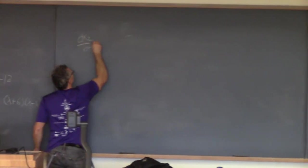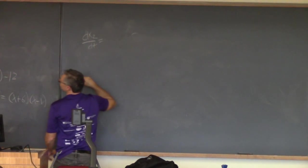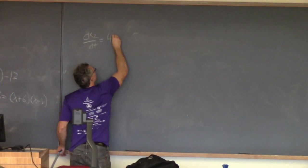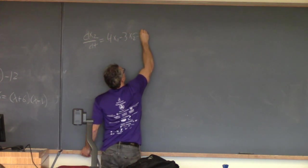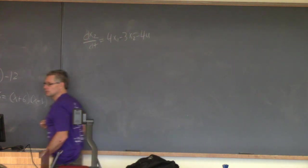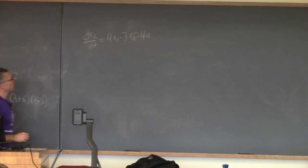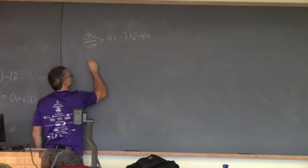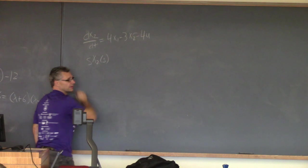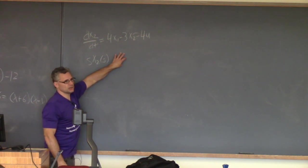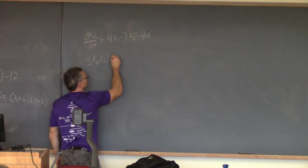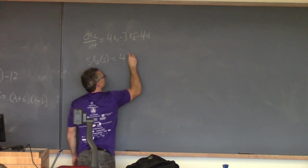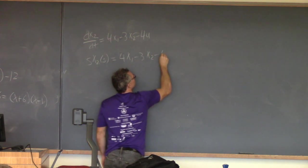Taking the second equation in scalar form: dx2/dt equals 4x1 minus 3x2 minus 4u. I'm going to take the Laplace transform of this equation. There's going to be an initial condition, but we're going to assume it drops out, because we're dealing with deviation variables.